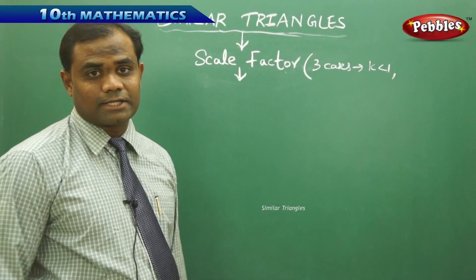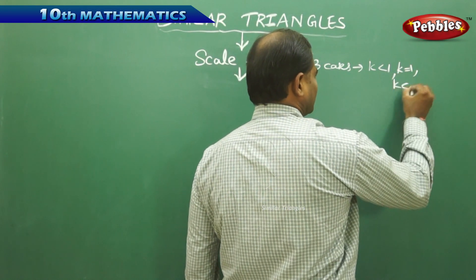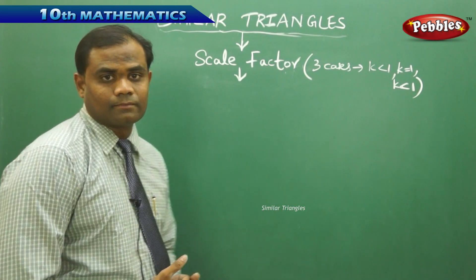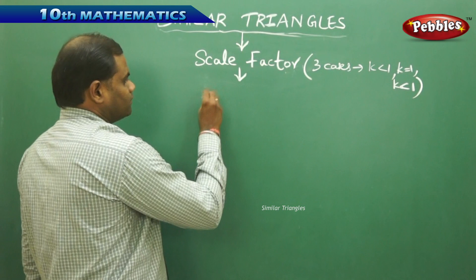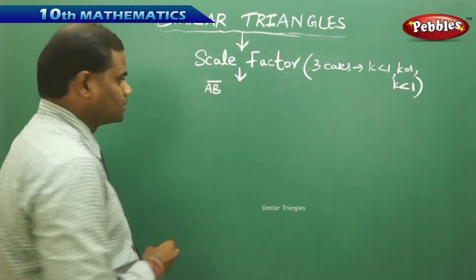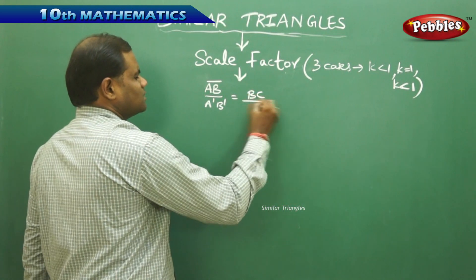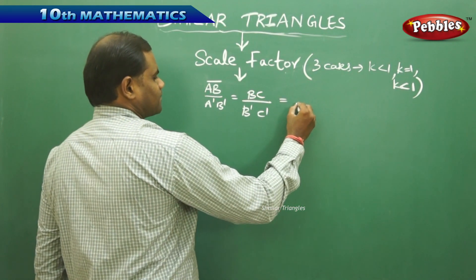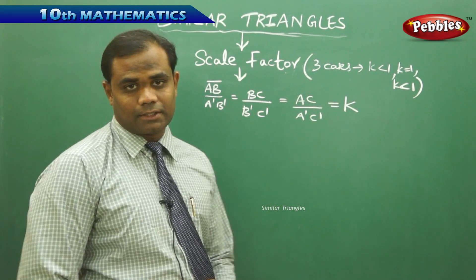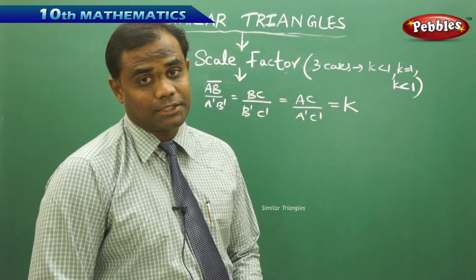Now let's cover three cases of understanding the scale factor. One is k greater than 1, k equal to 1, and k less than 1 — these are the three different cases we are going to study through the scale factor. We have already identified the scale factor from the previous session: AB/A'B' = BC/B'C' = AC/A'C' = k, for two triangles ABC and A'B'C'.